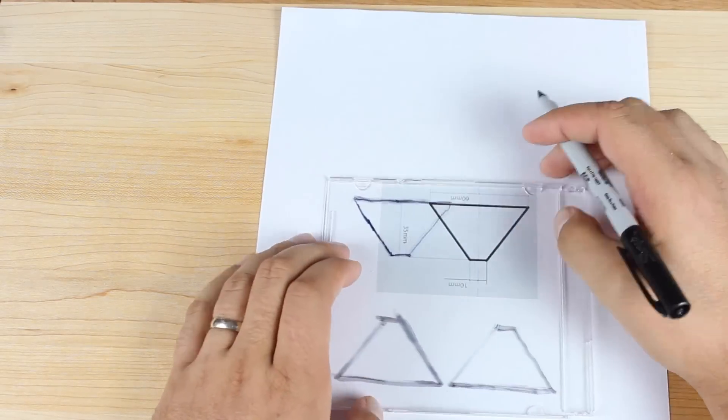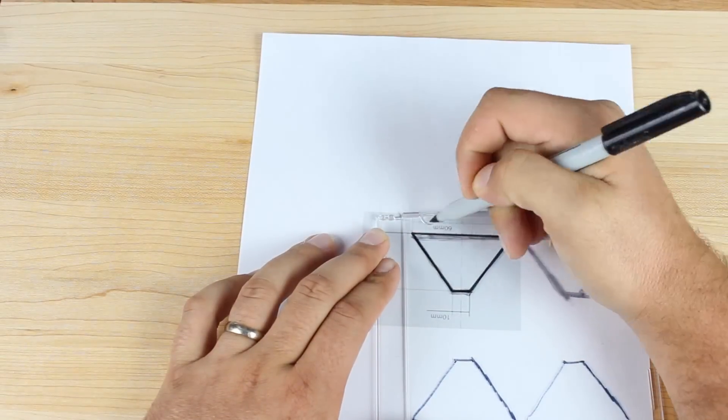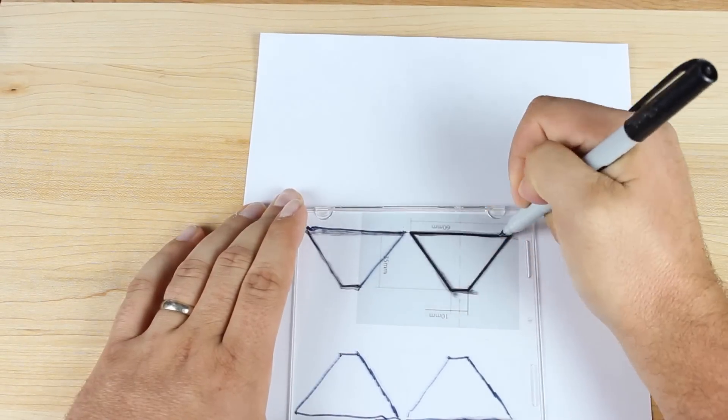Take the top side of the CD case, the part that normally holds like the insert, and what you'll do is trace the edges of the diagram. Go ahead and trace four of those triangles. These will all be four sides of your pyramid.